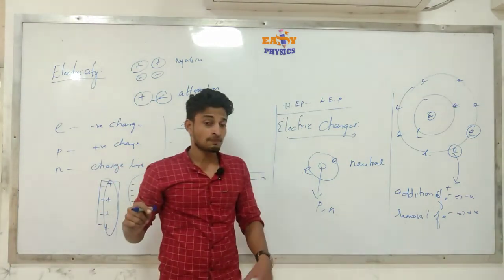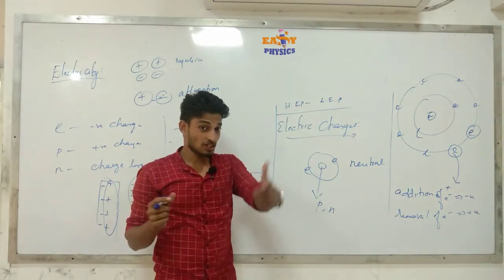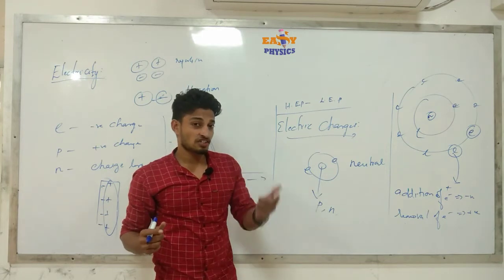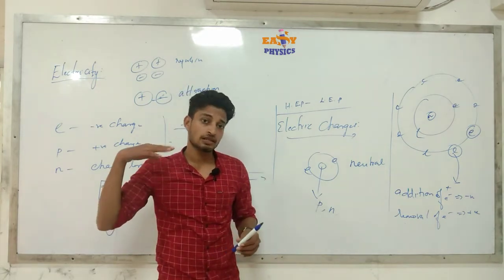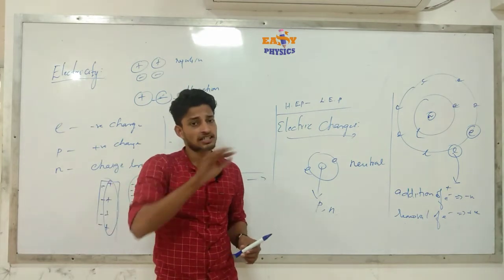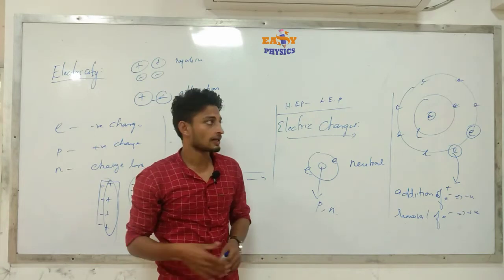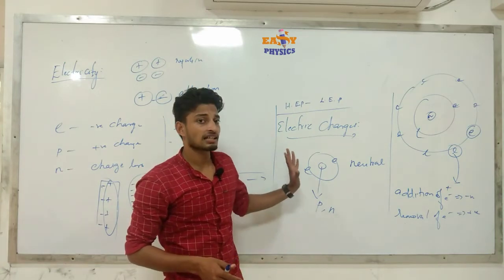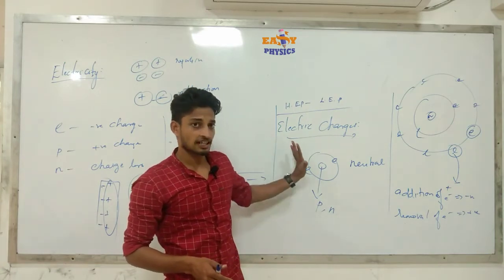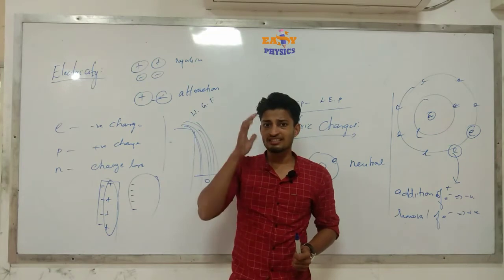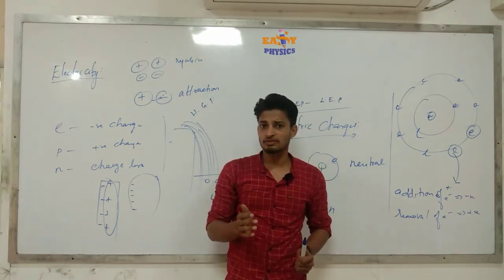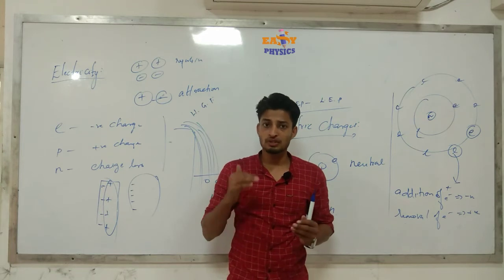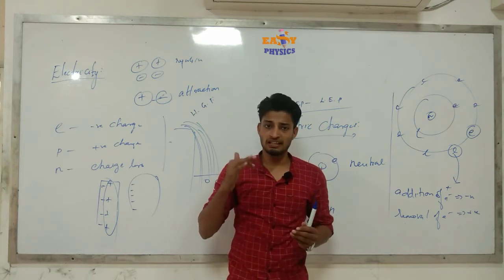What is electric current? It is related to electric potential. If you have more electric potential at one point and less at another, charges flow — we call that electric current. You can find more information in your textbook.